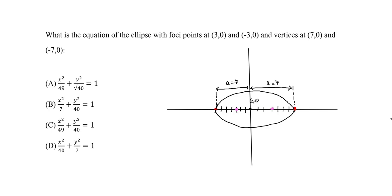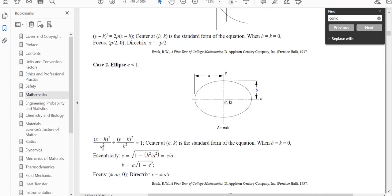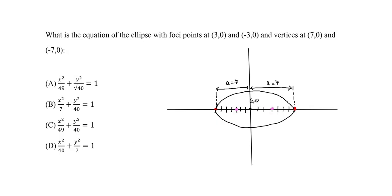Now we can determine which answer choices to eliminate. In the equation it's a squared — what is 7 squared? It's 49. So a² = 49. We can eliminate any option that doesn't have 49 in the denominator under x². That leaves us with two remaining options.